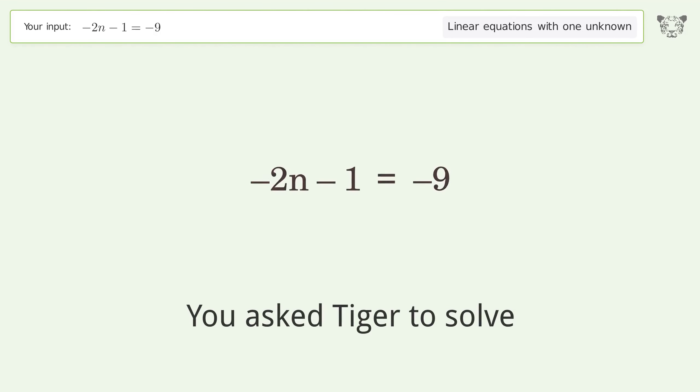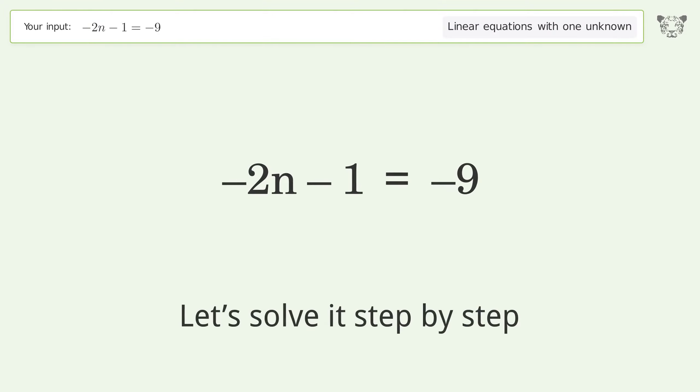You asked Tiger to solve. This deals with linear equations with one unknown. The final result is n equals 4. Let's solve it step by step.